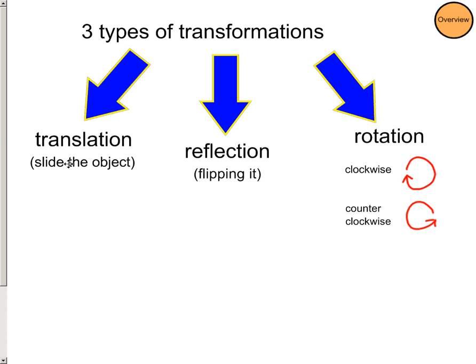Our first video, we looked at how to translate an object. That's basically sliding it. We also looked how to reflect it in our second video. And this one is our third one. It's our final type of transformation, and it's the rotation. Sometimes we'll talk about rotating it clockwise. That means you're spinning it to the right. Or counterclockwise, that means we spin it to the left. So that's our overview.